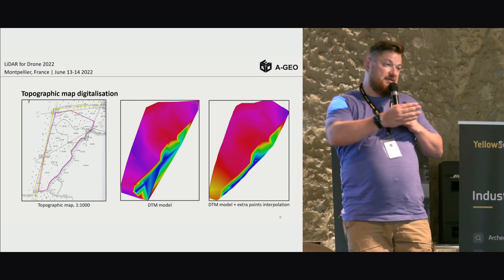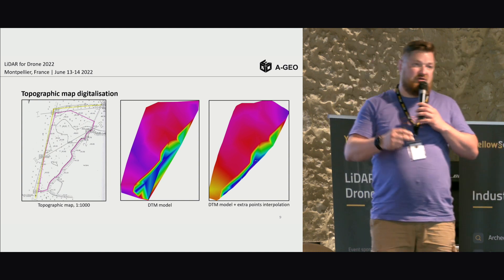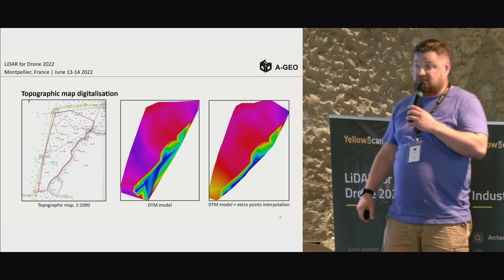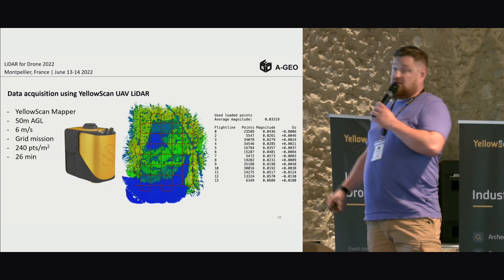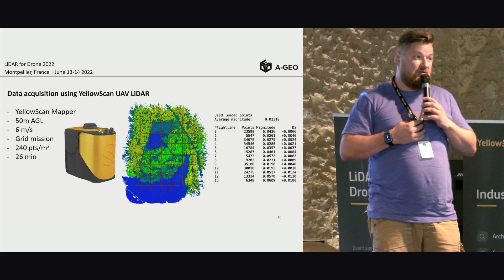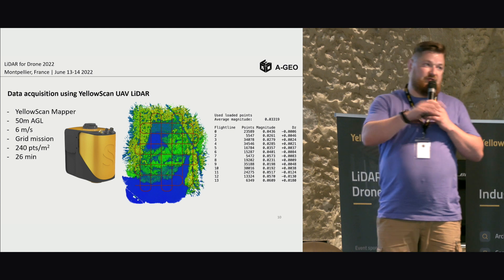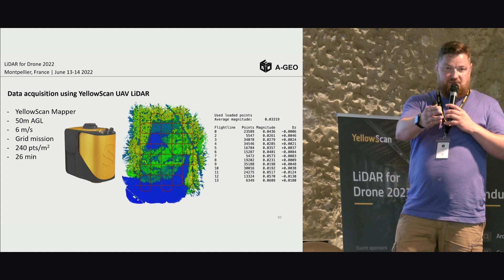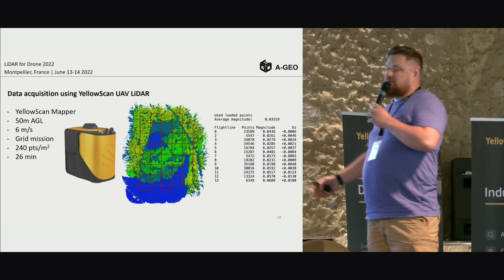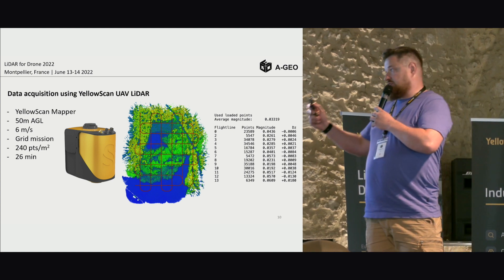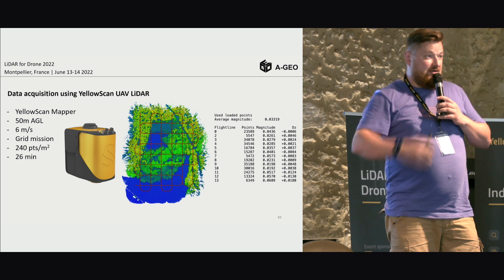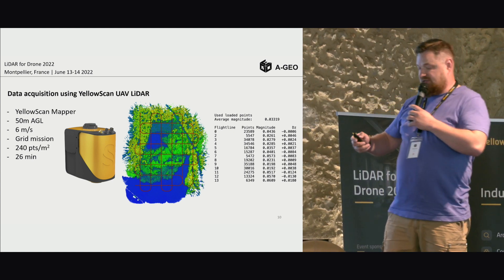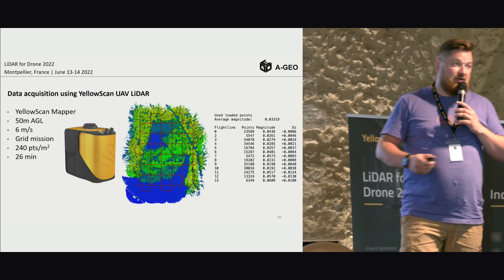The best part was using the YellowScan — it's very easy. As you've heard from previous speakers, you just press the yellow button and do your acquisition. For this project, we used a grid flight plan. I can tell you that we actually used the first version of the Mapper on this project, so the pictures I'm showing are current ones, but in reality it was captured with the first Mapper. Even then, the technical specification was 10 to 15 centimeters accuracy.